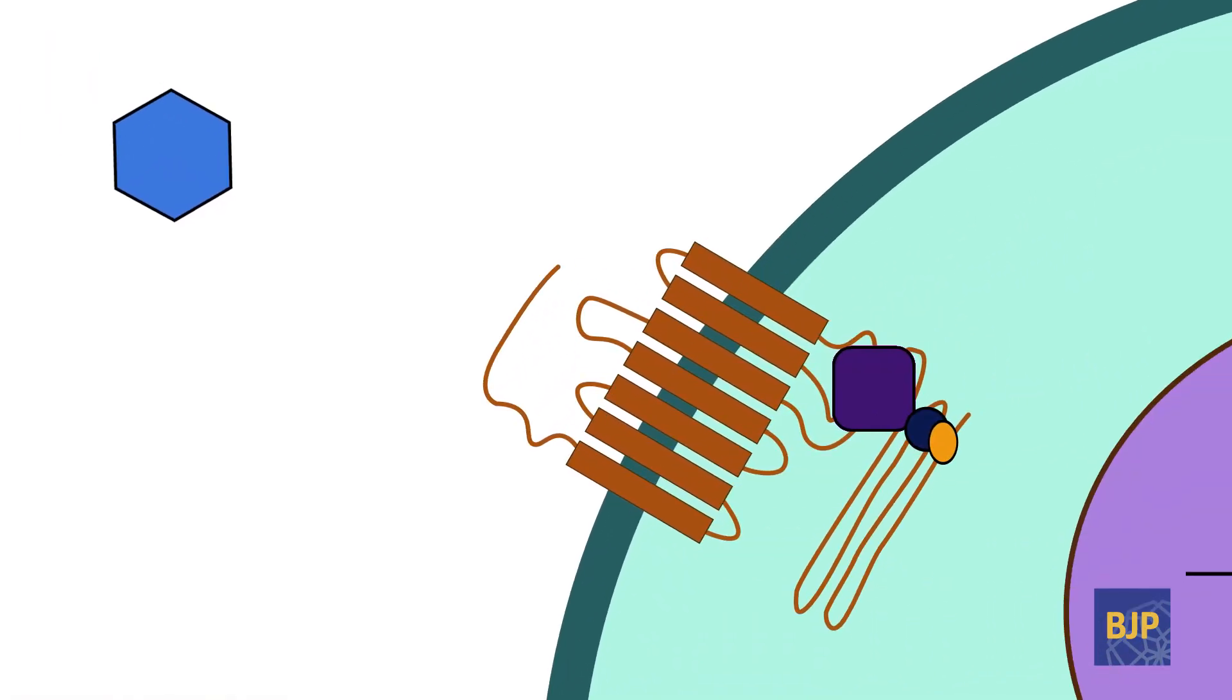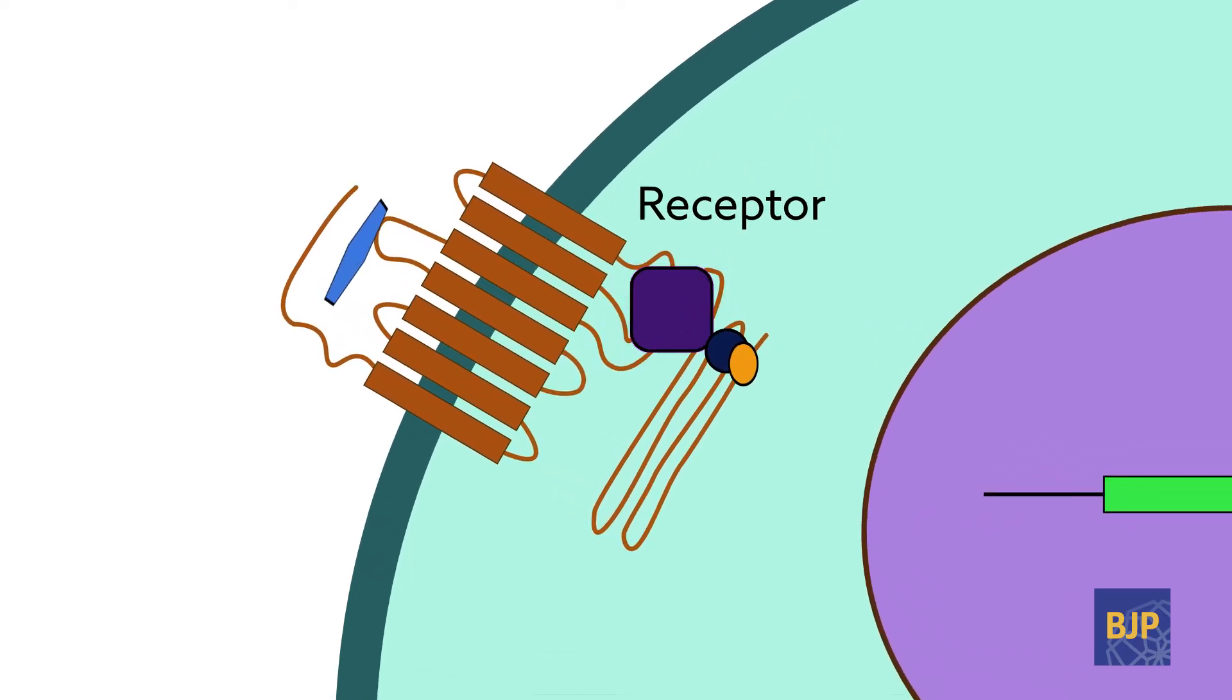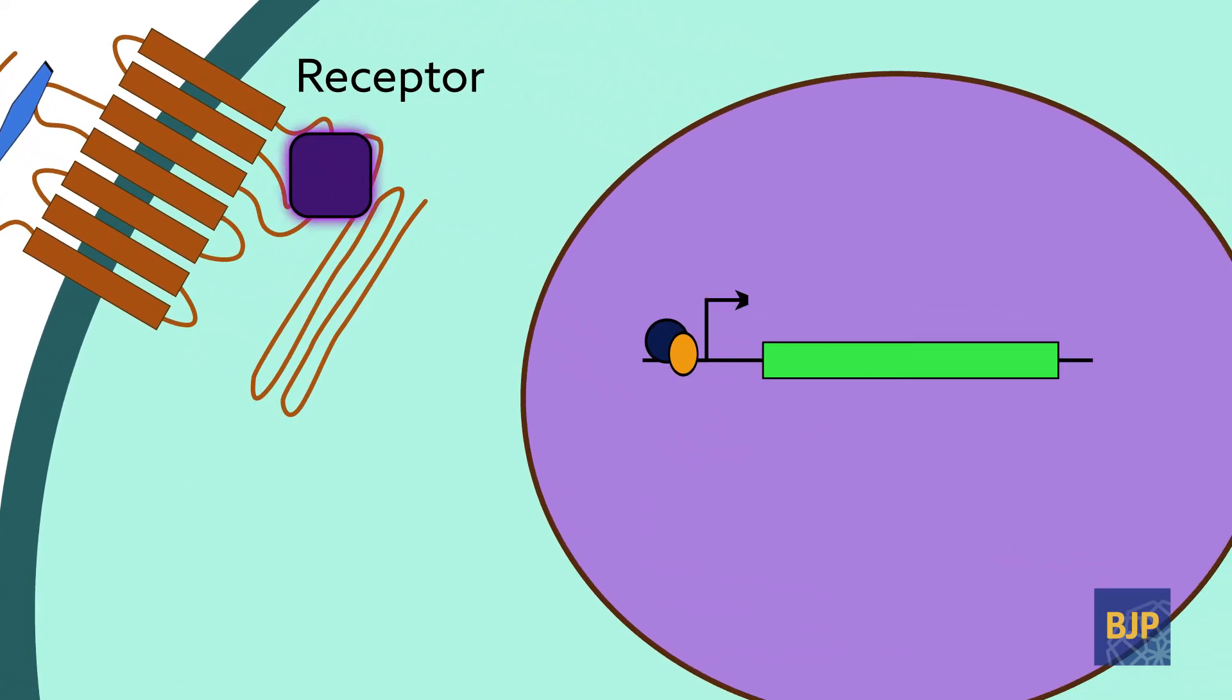Generally, drugs work by interacting with specific proteins, known as receptors, on the surface of cells. These interactions cause changes in cell signaling that allow the body to respond to medicine.